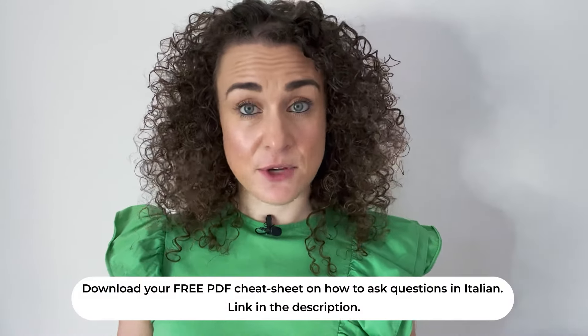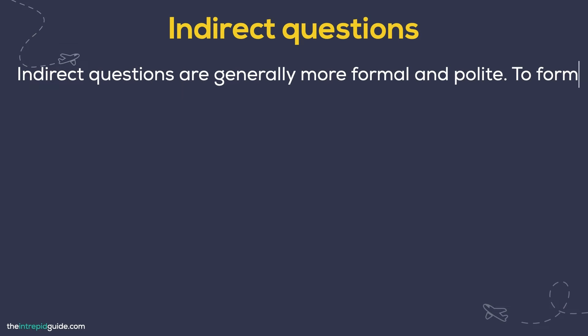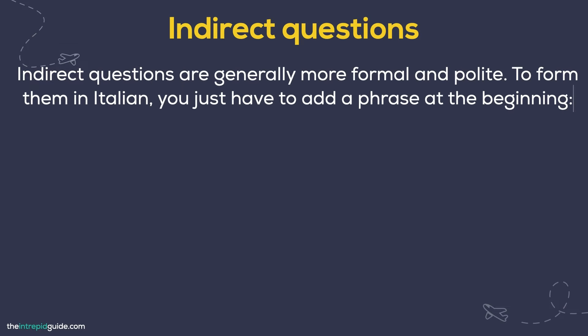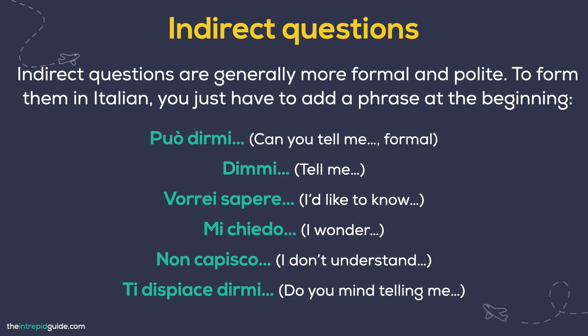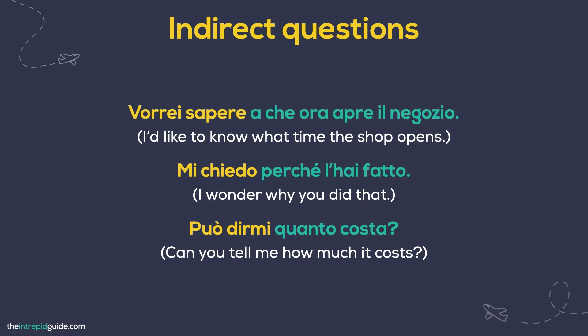So far we've looked at direct questions — questions that go straight to the point. Sometimes, however, this type of question is phrased in a more roundabout way to form an indirect question. Indirect questions are generally more formal and polite. To form them in Italian, you have to add a phrase at the beginning, such as: Può dirmi? Can you tell me? Dimmi? Tell me. Vorrei sapere? I'd like to know. Mi chiedo? I wonder. Non capisco. I don't understand. Ti dispiace dirmi? Do you mind telling me? Examples: Vorrei sapere a che ora apre il negozio. I'd like to know what time this shop opens. Mi chiedo perché l'hai fatto. I wonder why you did that. Può dirmi quanto costa? Can you tell me how much it costs?